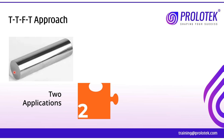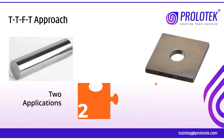Any surface that does not depend upon neighboring surfaces is called an individual feature. Any surface that depends upon neighboring surfaces is called a related feature. For example, to drill a hole in a prismatic part, you need X and Y coordinates — the help of two surfaces. So the hole axis is dependent on those two surfaces, making it a related feature.